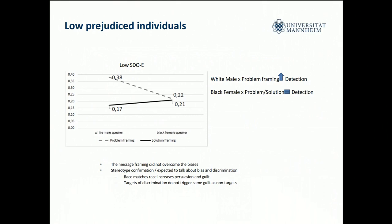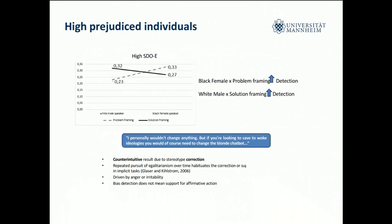It really doesn't matter if she says it in a positive or negative way. The literature also says that since it is a stereotype confirmation — it's expected for minorities to talk about discrimination — message scrutiny is reduced. But since it is not expected for a white man to talk about discrimination, message scrutiny increases and it has a better effect. However, in high-prejudiced individuals, the Black female speaker using the problem framing actually increases bias detection the most. This counter-intuitive result is due to the mechanism of stereotype inhibition, causing the reversal. We are doing replications to understand exactly why this happened.